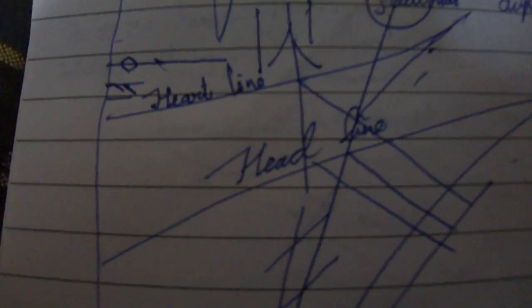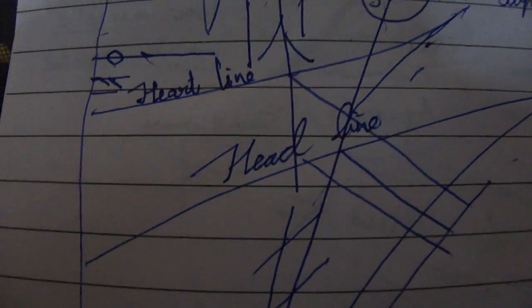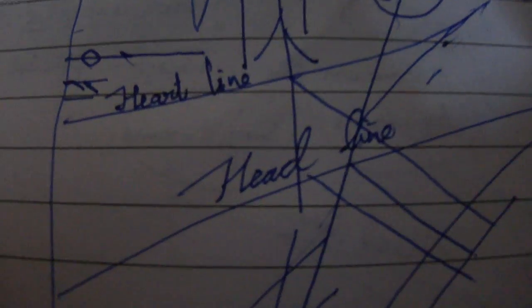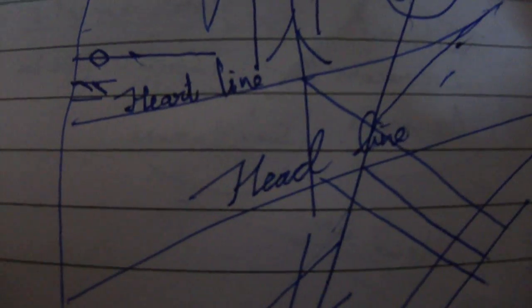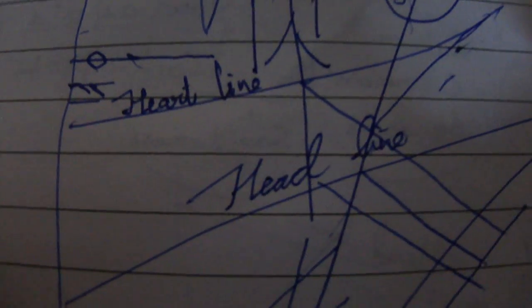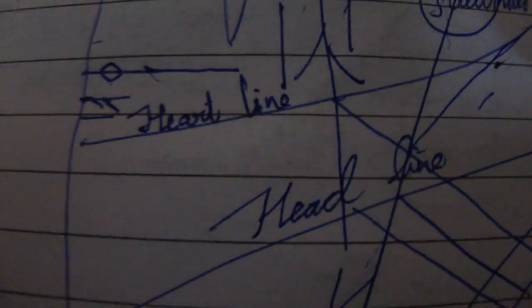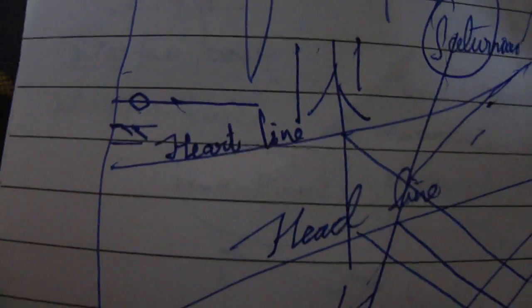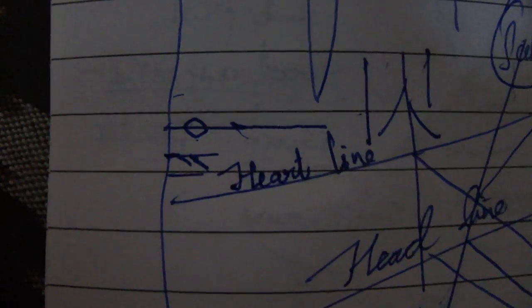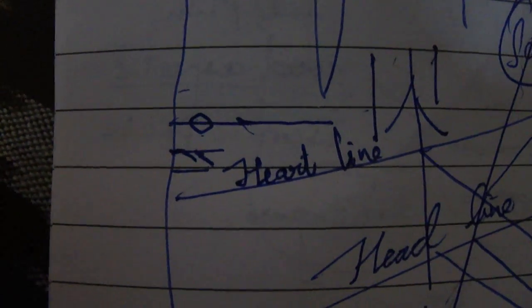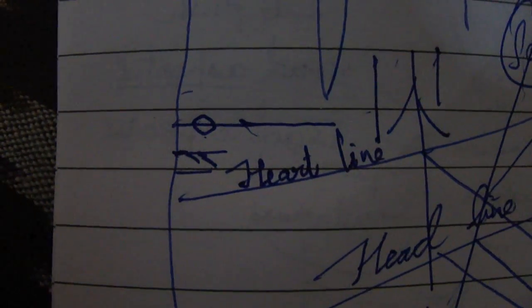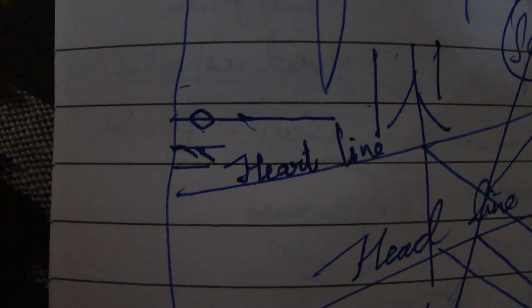Good morning everyone. This is another session on palmistry and we will be discussing about the marriage line or the relationship lines. We will be discussing general points in this video and will first start with the lines found here. The horizontal lines indicate towards relationships, and I will be trying to explain how we can read this line.